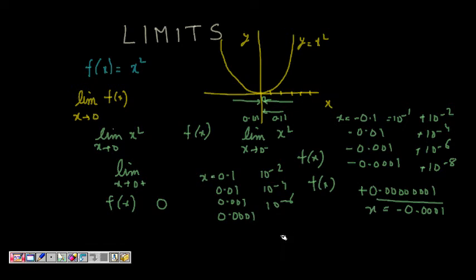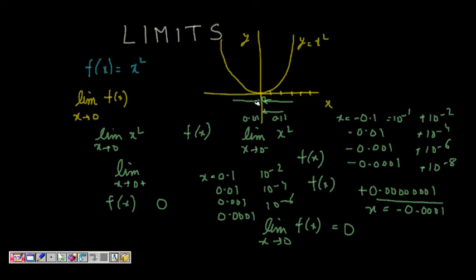In that case we say that the limit of f(x) as x tends to 0 is equal to 0, because as we are approaching x = 0, f(x) is also approaching 0. This is the meaning of the limit of a function.